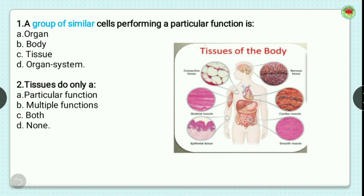First question: a group of similar cells performing a particular function is? The options are organ, body, tissue, and organ system. The definition of tissue is a group of similar cells performing a particular function, so the correct option is option C, tissue.